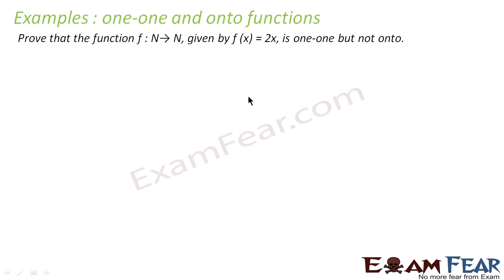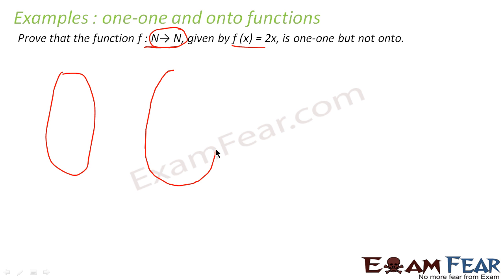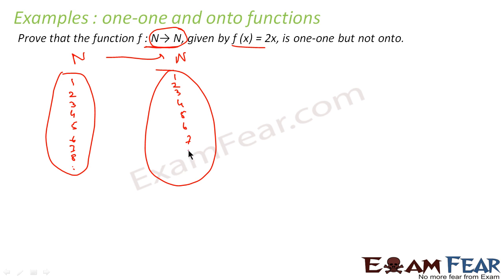Let's take another example. We have to prove that the function defined from N to N given by f(x) = 2x is one-to-one but not onto. This is true only for natural numbers — please pay attention. If it is N to N it has a different significance; if it is R to R it has a different significance. So the domain and codomain matter. Since it is N to N, let's write natural numbers on both sides: 1, 2, 3, 4, 5, 6, 7, 8, ... on the input side and 1, 2, 3, 4, 5, 6, 7, 8, 9, 10, ... on the output side.